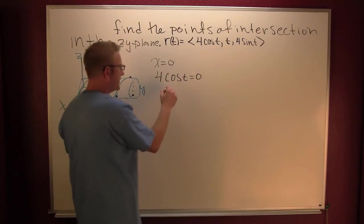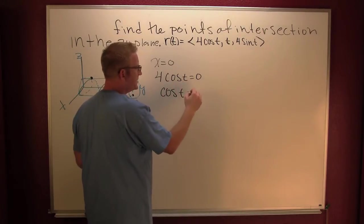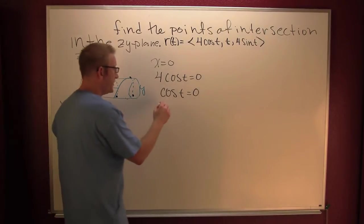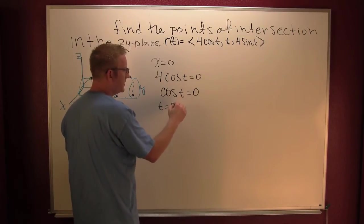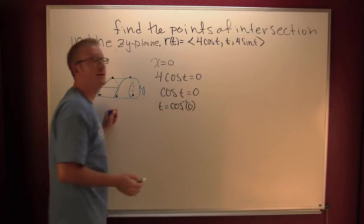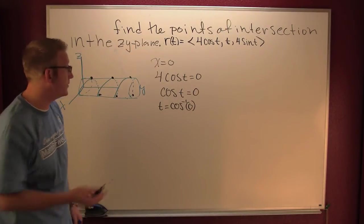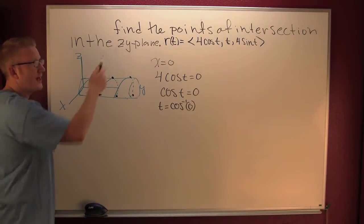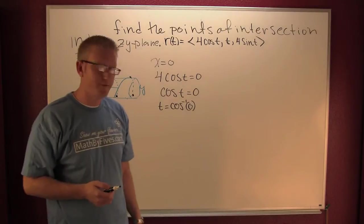So then you got the cosine inverse of zero. So now we need to know where the cosine is zero and this is going to return our t values. The t values that we're going to have to plug in to our r of t.